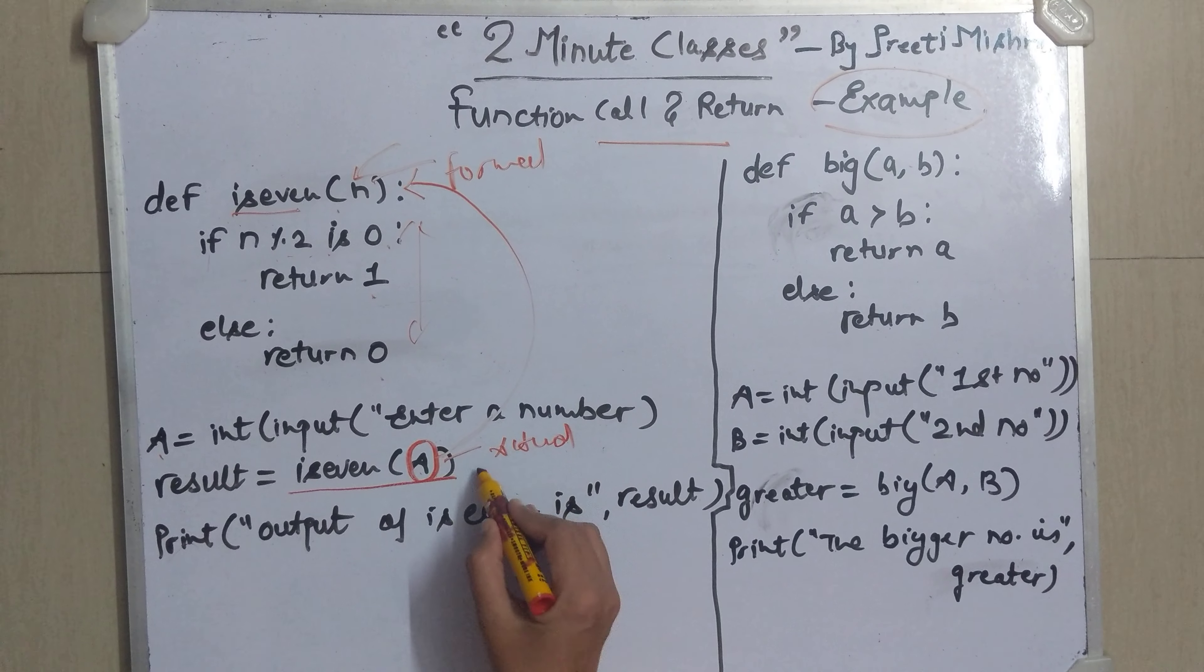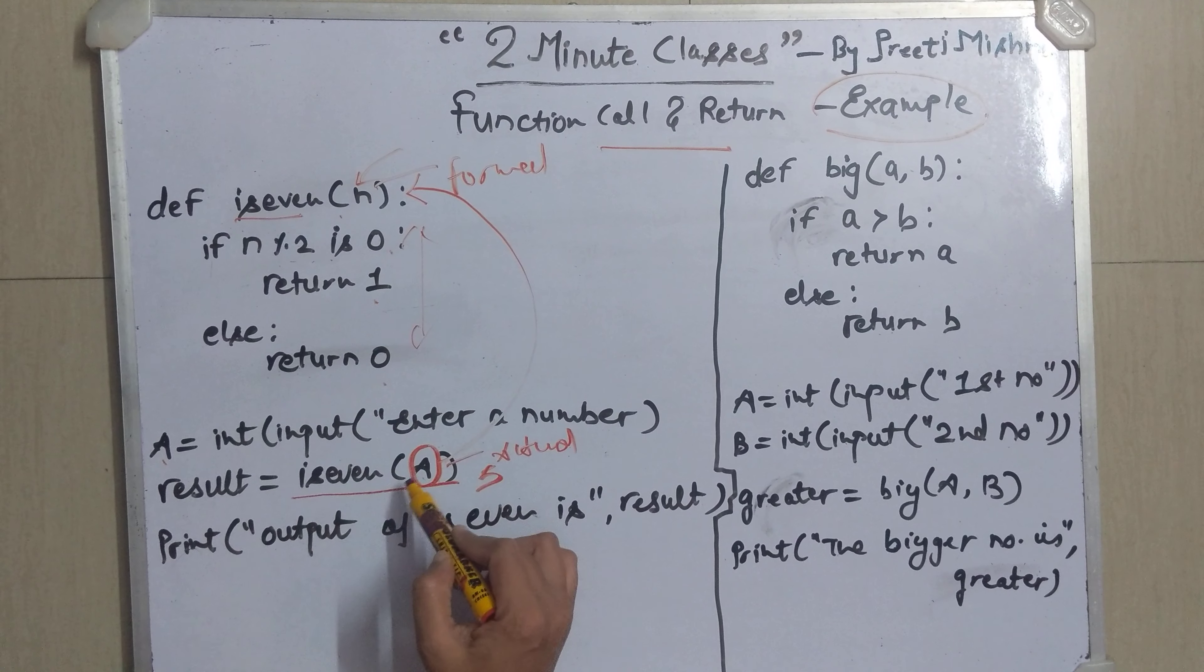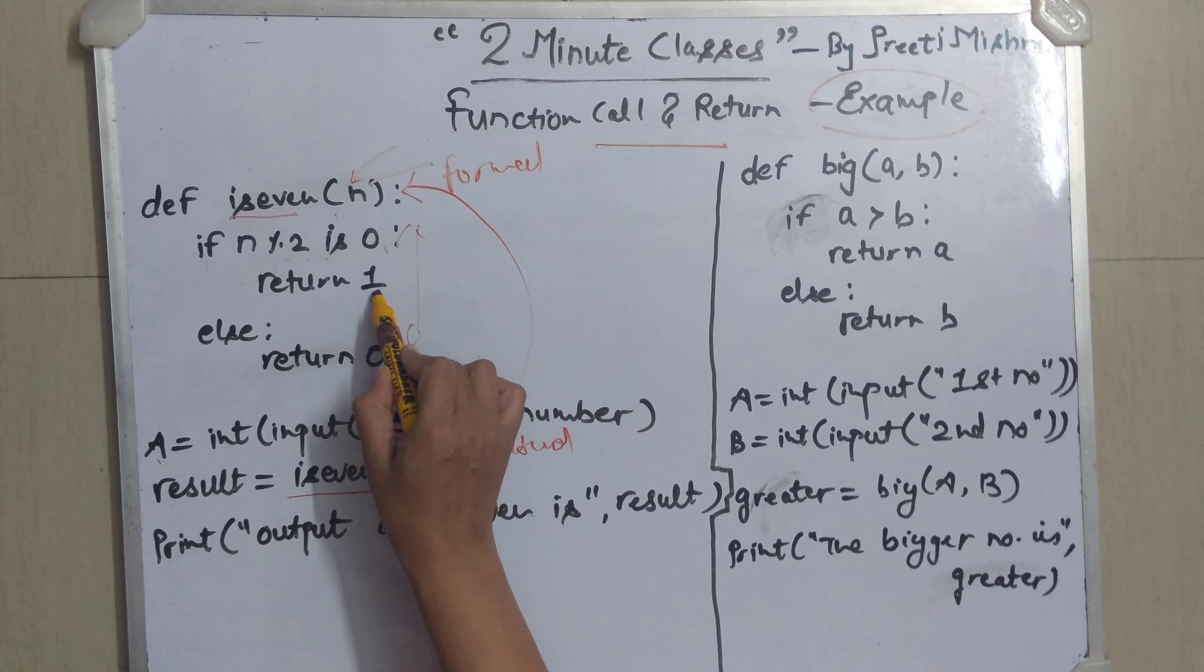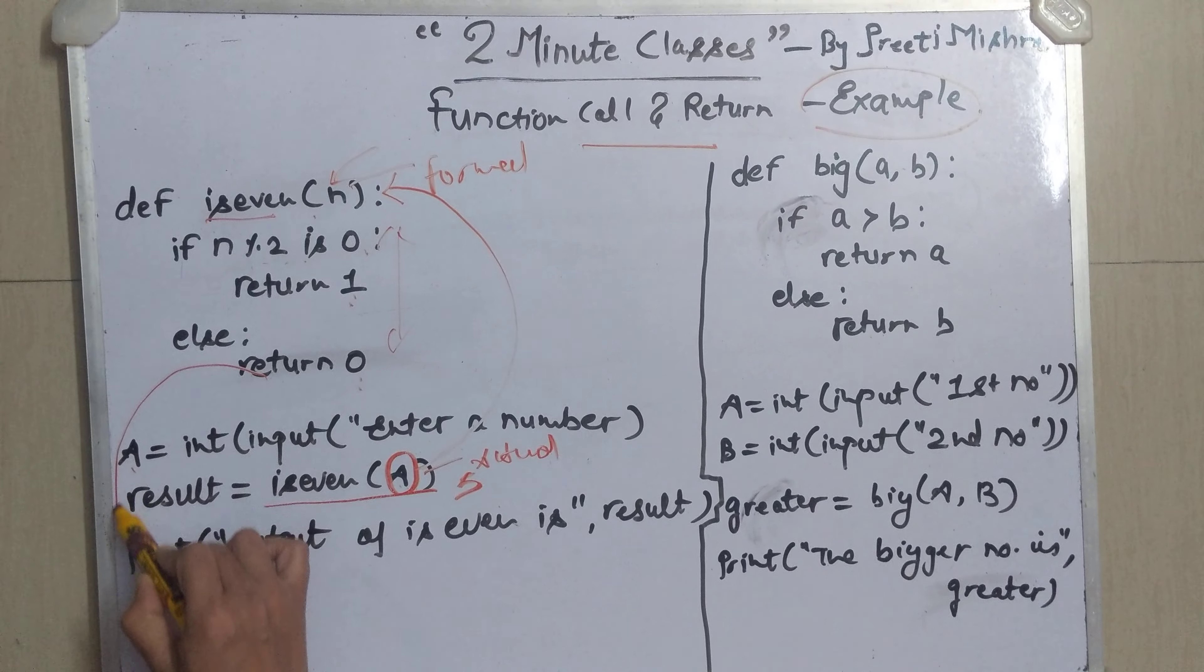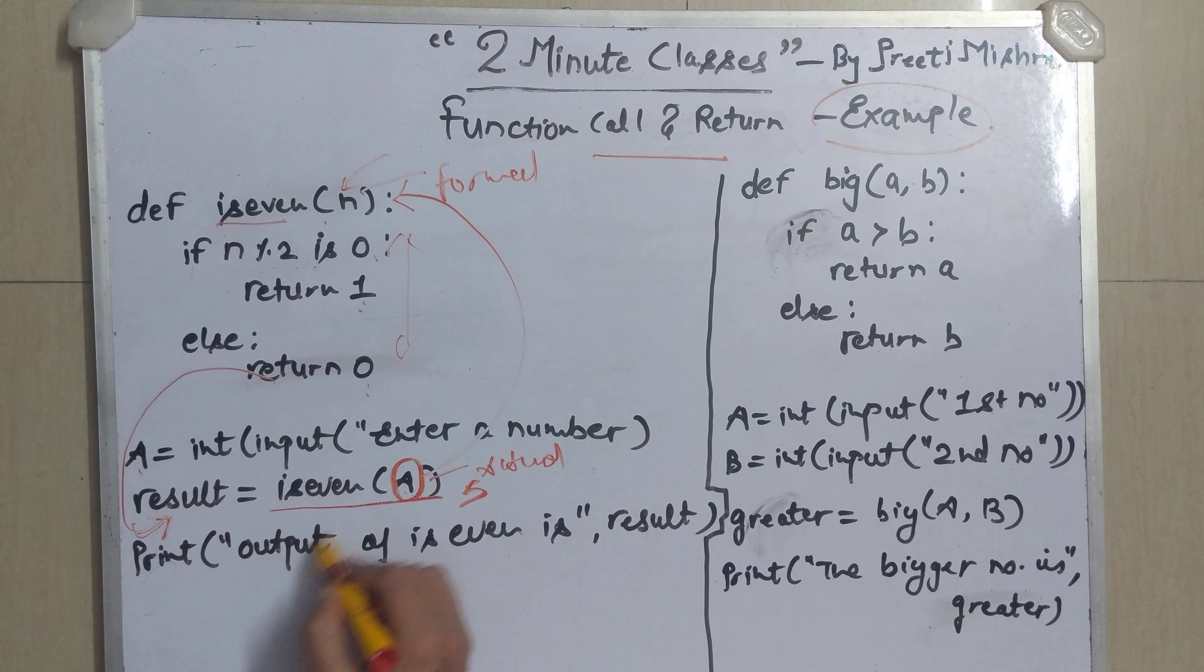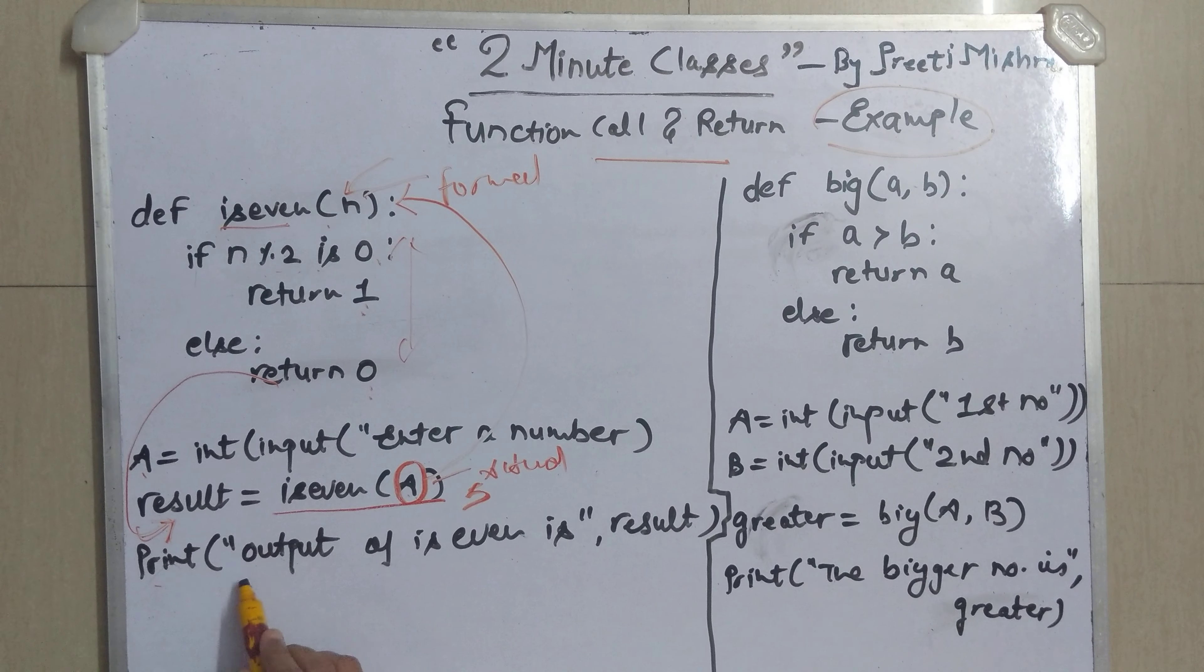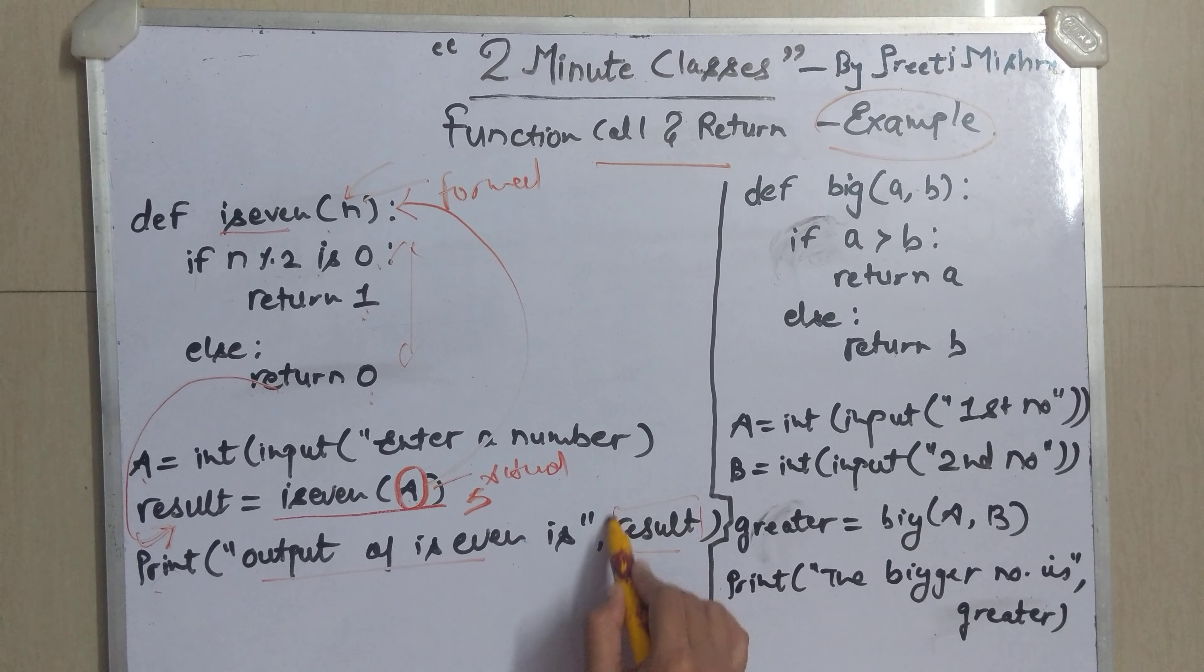So suppose you enter a as 5 so n will become 5. So this will calculate whether the entered a was even then it will return 1 otherwise it will return 0 and the returned value will be copied into result. So this is how function call executes. And after this it will print output of the function isEven is whatever the value of result is.